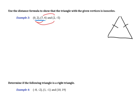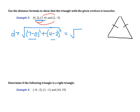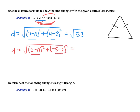Starting with the first two points: distance equals the square root of (7 minus 0) squared plus (4 minus 2) squared. That gives 7 squared which is 49, and 2 squared which is 4, so we get the square root of 53. For the first and last points: d equals the square root of (2 minus 0) squared plus (negative 5 minus 2) squared, giving 4 plus 49, which is also the square root of 53.